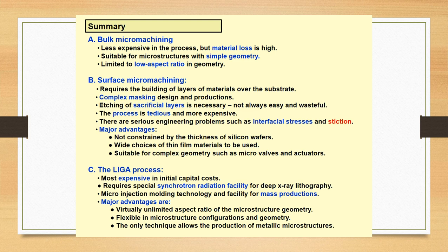As far as surface micromachining is concerned, it requires the building of layers of materials over the substrate. Complex masking design and production are needed. Etching of sacrificial layers is necessary, not always easy, and wasteful. The process is tedious and more expensive. There are serious engineering problems such as interfacial stresses and stiction. The major advantages are: not constrained by the thickness of silicon wafers, wide choices of thin film materials can be used, and it's suitable for complex geometry such as micro valves and actuators.